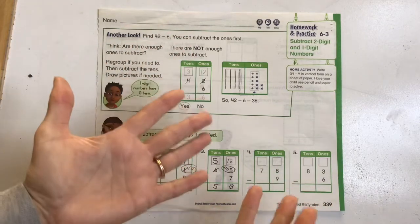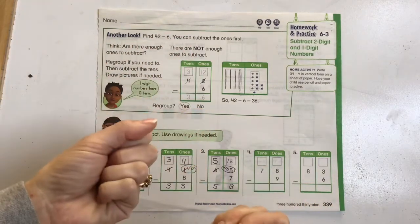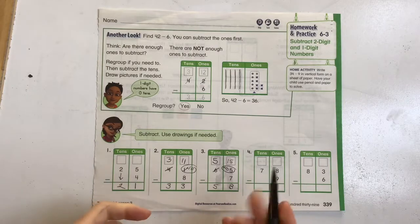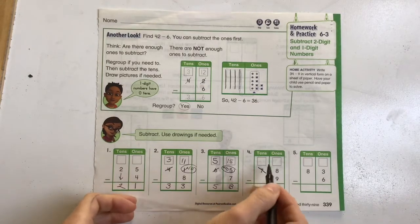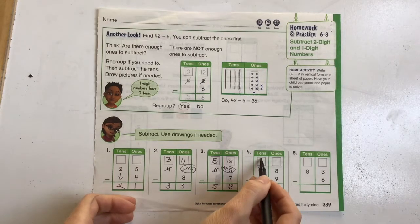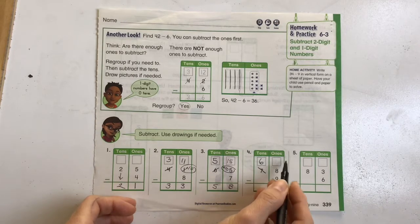8 minus 9. So if I have 8 and I want to subtract 9, I don't have enough. I only have 8. I need to have more. So I'm going to take one group of 10 away over here. 7 minus 1 group of 10 is going to become 6.